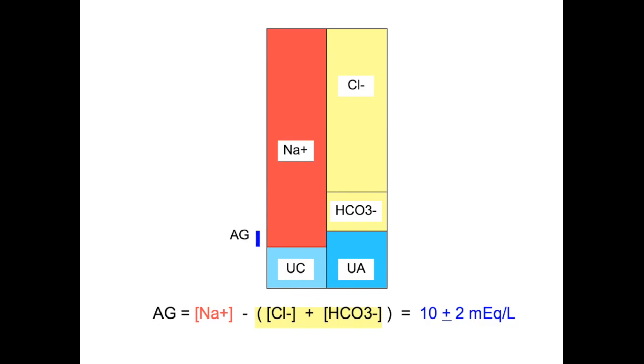Note that although we can't directly measure the concentrations of miscellaneous anions or cations, we can calculate the size of the gap by subtracting the sum of the concentrations of chloride and bicarbonate from the concentration of sodium to give an anion gap of approximately 10 milliequivalents per liter.